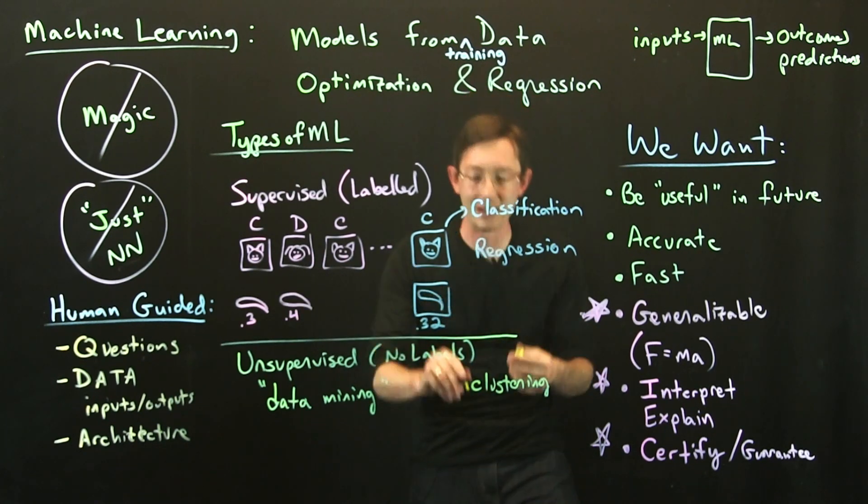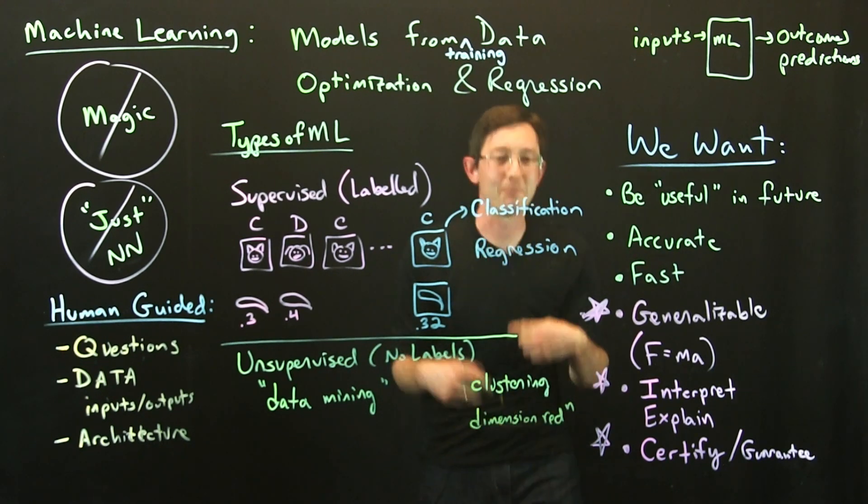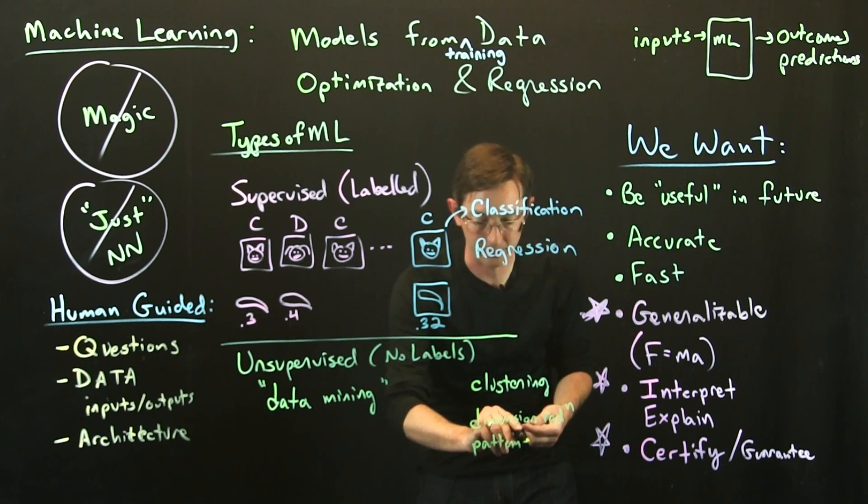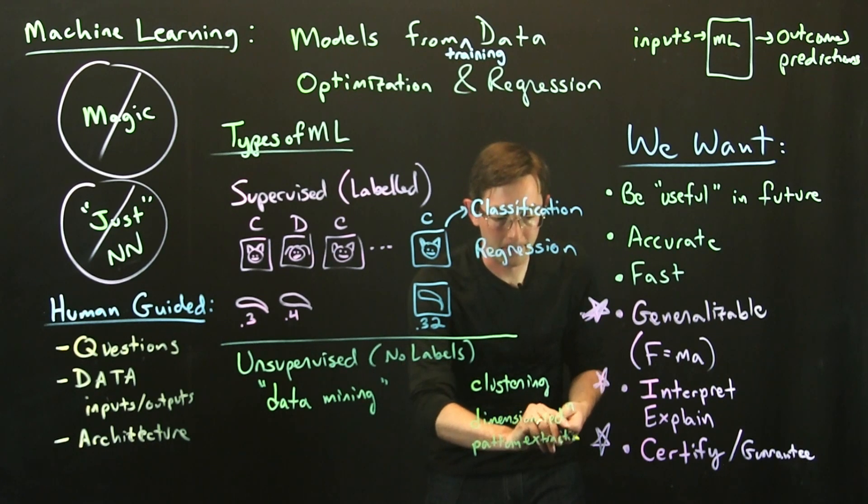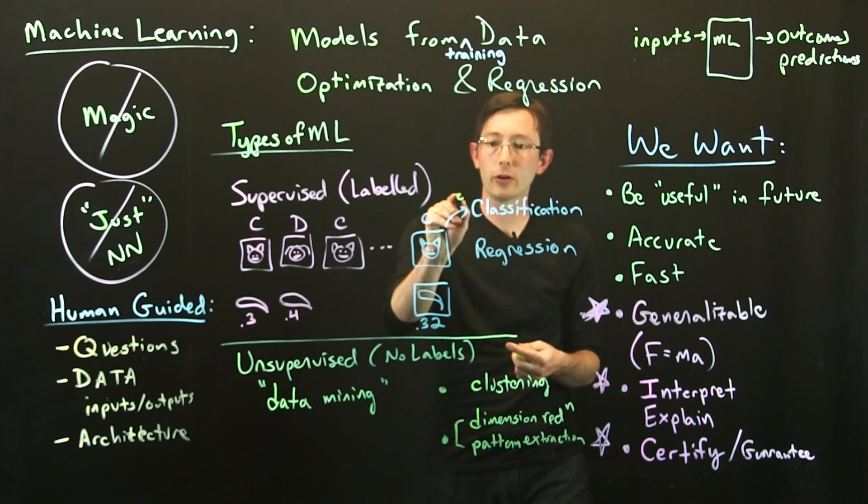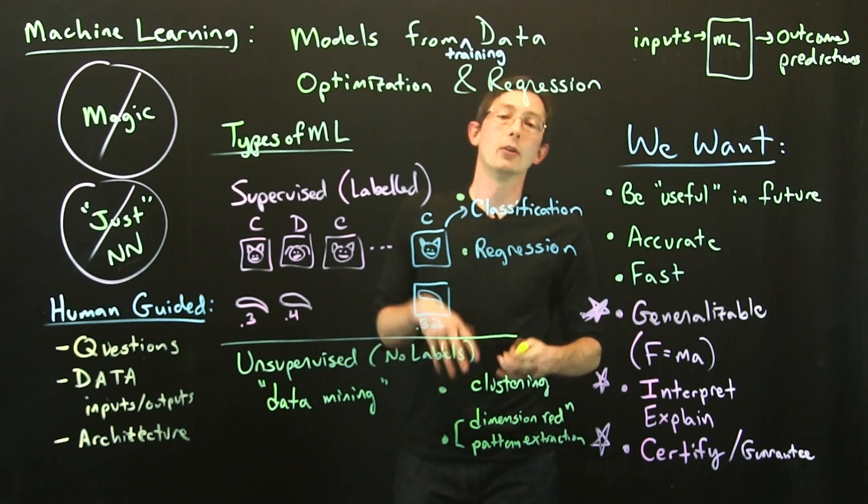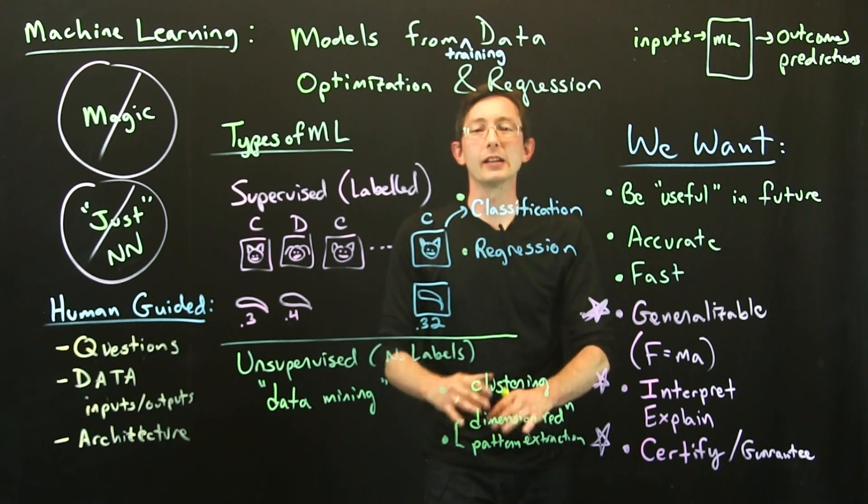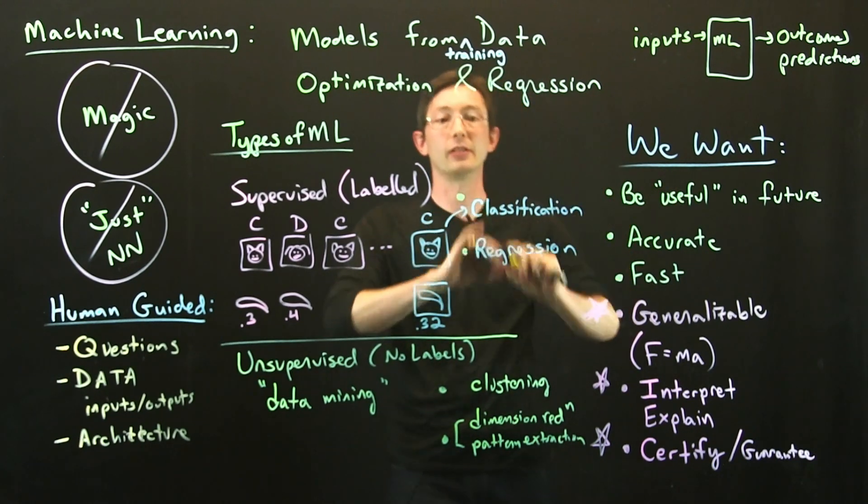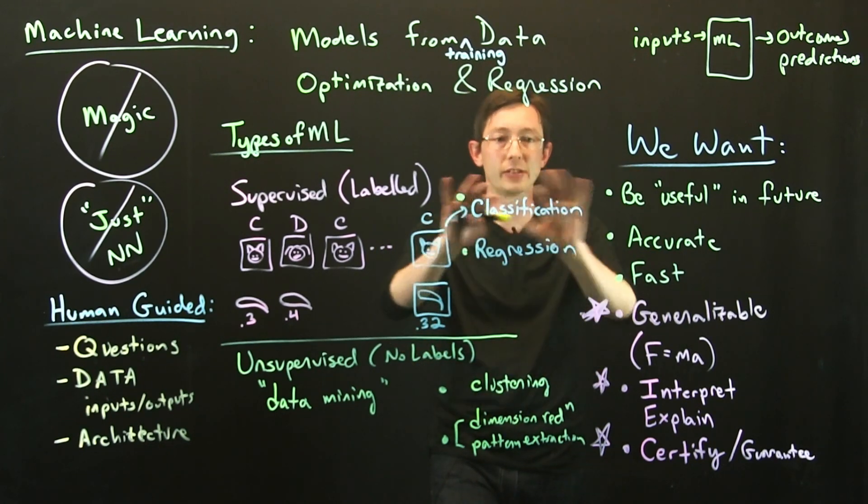That's what I call dimension reduction. Pattern extraction is another one—pattern or feature extraction. I should say that each of these four groups—classification, regression, clustering, and pattern extraction or feature extraction—each of these four areas is a huge area of machine learning. There are textbooks on classification and regression and clustering, thousands and thousands of papers and researchers in each of these areas.